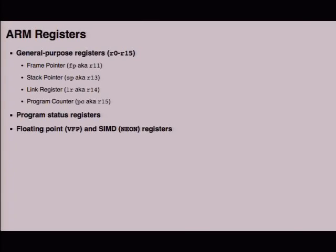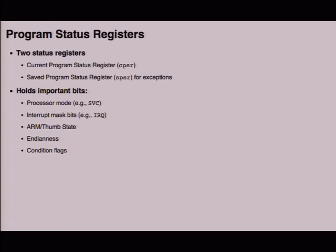ARM has 16 general purpose registers. R11 is the frame pointer, R13 is the stack pointer, R14 is the link register — when you do a call instruction, the link register saves your current PC so you have something to return to — and R15 is the program counter. ARM also has program status registers. There are also VFP floating point instructions and NEON SIMD instructions, which are useful for vector or GPU code.